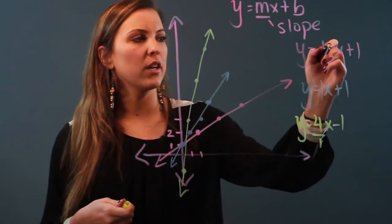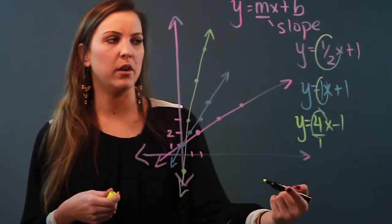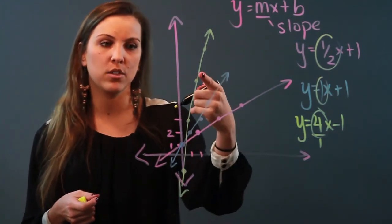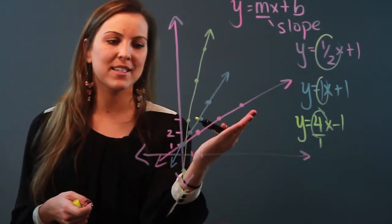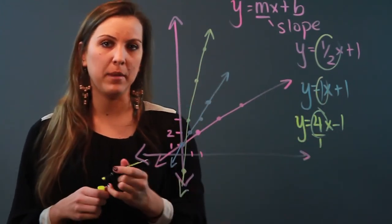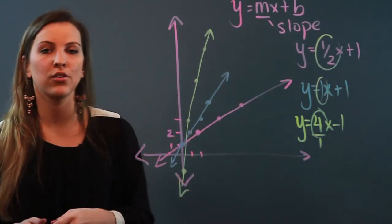What you notice is if you look at my slopes—one-half, one, and four—they start to increase. As the slope increases from the pink line to the blue line to the neon green line, the line gets steeper. So the greater the slope, the steeper the line becomes. That's an explanation of the slope effect in a linear equation.